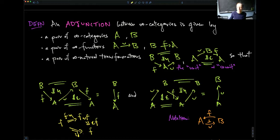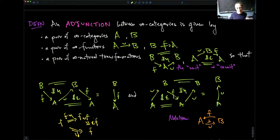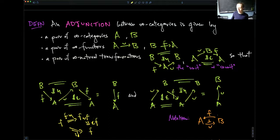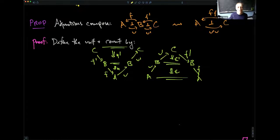This is the standard definition of an adjunction between infinity categories. I'm relying on my authority as someone who works in this area to confirm this agrees with other definitions that have been proposed. For notation, I use a turnstile where the flat bit points to the right adjoint and the pointy bit points to the left adjoint.